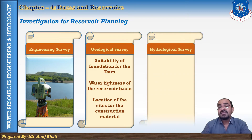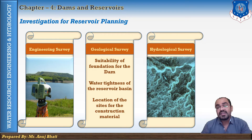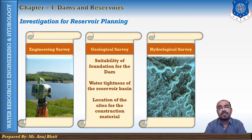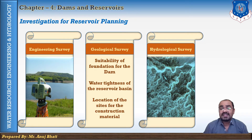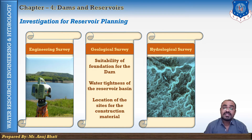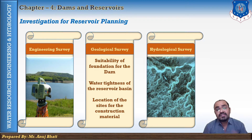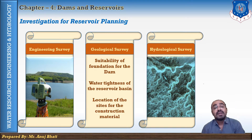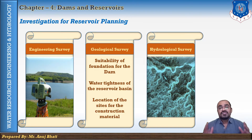The third investigation is the hydrological survey, which is a very important aspect of reservoir planning. Hydrological investigation is divided into two parts: the study of the runoff pattern of the river at the proposed dam site to determine the storage capacity of the reservoir corresponding to a given demand, and the determination of the hydrograph of the worst flood to determine the spillway capacity and design of the spillway.